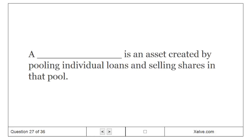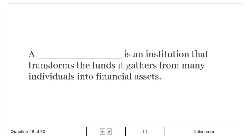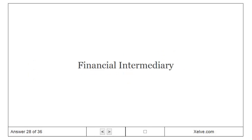A loan-backed security is an asset created by pooling individual loans and selling shares in that pool. A financial intermediary is an institution that transforms the funds it gathers from many individuals into financial assets.